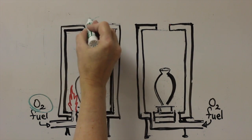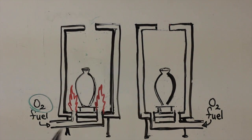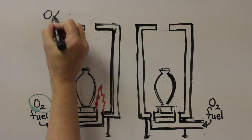Oxidation firing means that there is enough oxygen in the kiln atmosphere for the combustion of fuel to take place.